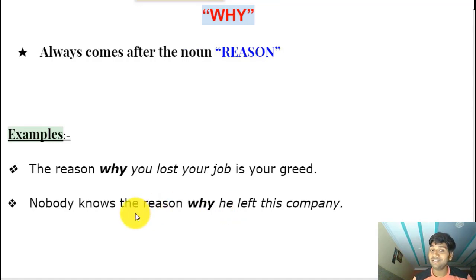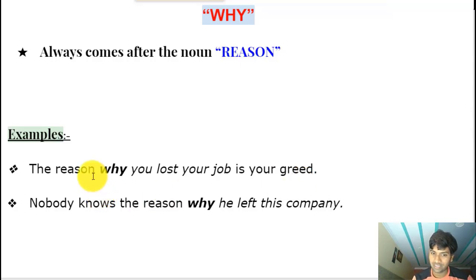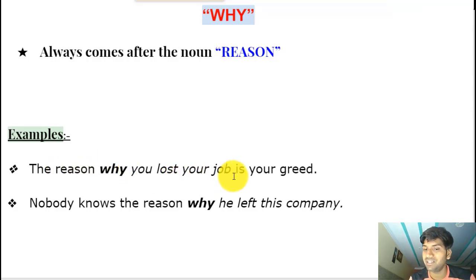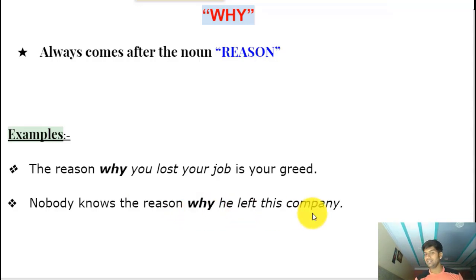Finally, 'why.' Why comes after the noun 'reason' — always after 'reason.' Examples: 'The reason why you lost the job is your greed' — 'why' comes at the beginning of the adjective clause, identifying the noun 'reason.' 'Nobody knows the reason why he left this company' — 'why' comes next to the noun 'reason,' identifying it and giving information about it. That's how we use the relative pronoun 'why.'